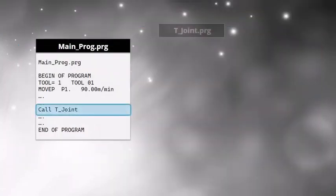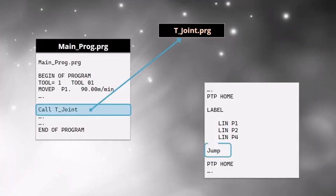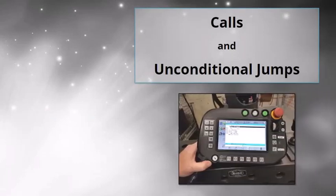In this module, we explored how to use calls and unconditional jumps when using the robot. You've completed using calls and unconditional jumps.